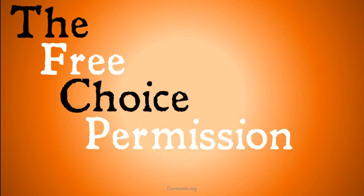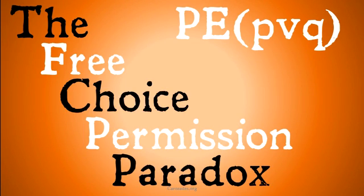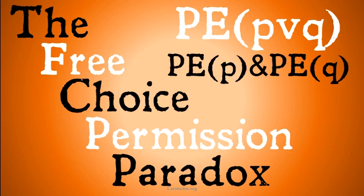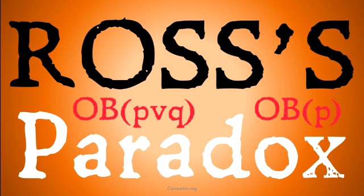The first paradox is going to be the free choice permission paradox. This is a paradox for permissibility. The second one is going to be Ross's paradox, a paradox for obligation and disjunction.